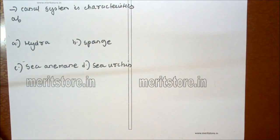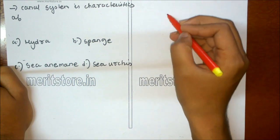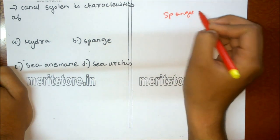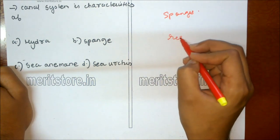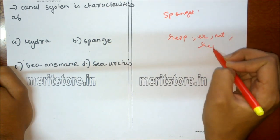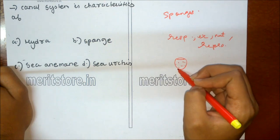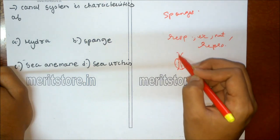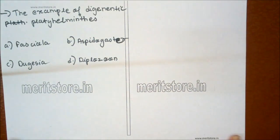Canal system is a characteristic of: A Hydra, B sponge, C sea anemone, D Aurelia. Sponges have a canal system and need a continuous current of water flowing through their body for respiration, excretion, nutrition, and reproduction. Water enters through small pores known as ostia and is expelled through a large opening called the osculum. Option B is the correct answer.